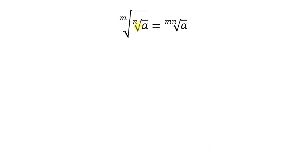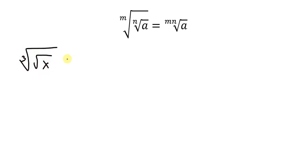The mth root of the nth root of a is equal to the mn root of a. When you have this structure, you simply multiply the two indices. For example, the cube root of the square root of x — 3 times 2 is 6 — so that is the 6th root of x.